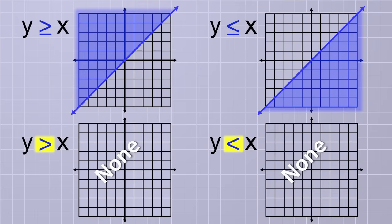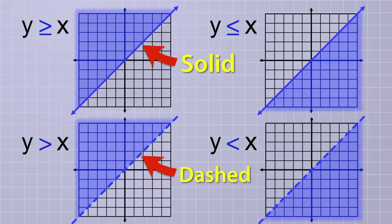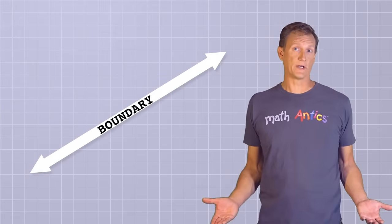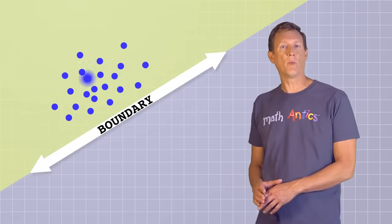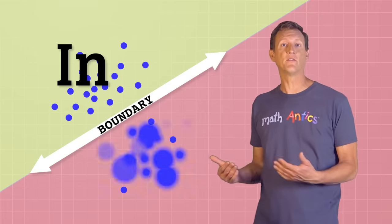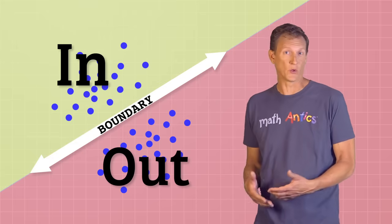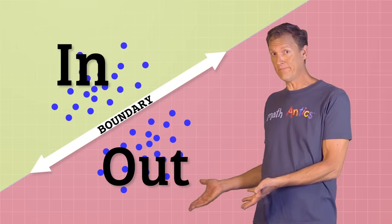So what if we got rid of those equal signs and just used the pure greater than and less than signs instead? In those cases, none of the points exactly on the y equals x line would be a solution to the inequality. But how can we show that on our graph? Well, the convention is to draw a solid line when the points exactly on the line are included, but draw a dashed line when they are not included. Basically, the line serves as a boundary. On one side of it, all the points are definitely in the solution set, and on the other side, all of the points are definitely outside the solution set. As for the boundary itself, the question becomes, is the line in or out?